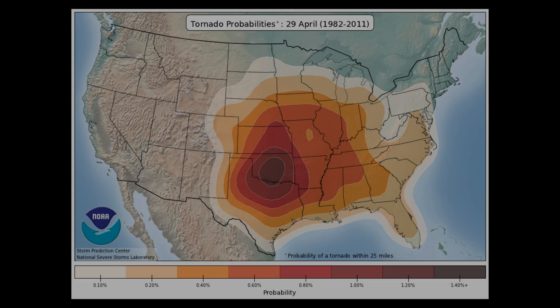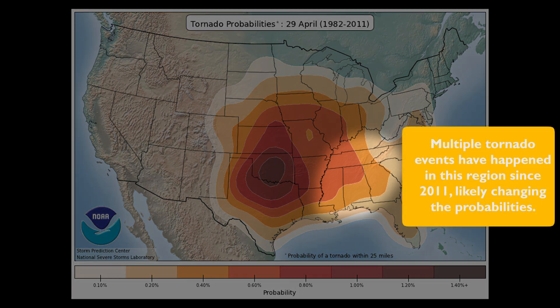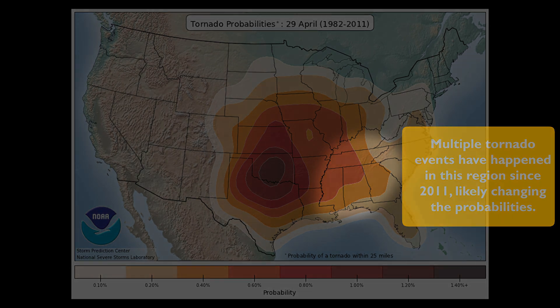Another thing to remember is the window of time being used for the historical probability and return interval. For example, this image from the Storm Prediction Center shows the probability of any tornado estimated from a 30-year period of severe weather reports from 1982 to 2011. The key thing to realize is that any tornado outbreak along with individual tornadoes after 2011 was not included in this calculation. Therefore, the historical probability may not be correct for areas that have seen an increase in tornado activity, like the southeastern United States in the April time frame.